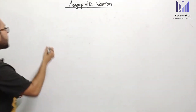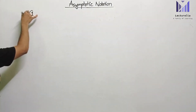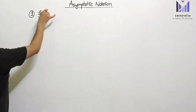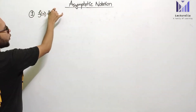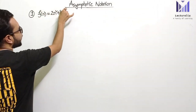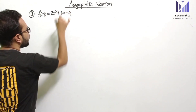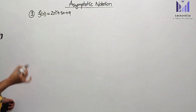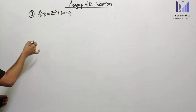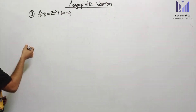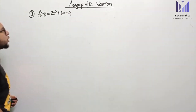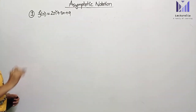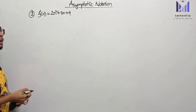First example: we have a function f(n) = 2n² + 3n + 4. This function represents a time complexity. We will analyze it using Big O notation. The condition we need to check is f(n) less than or equal to c into g(n).